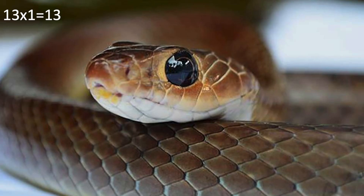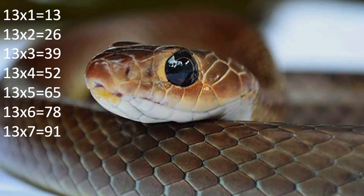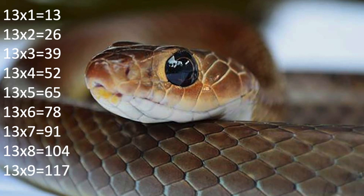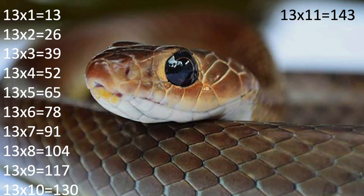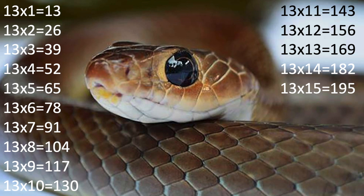Thirteen times one is thirteen. Thirteen times two is twenty-six. Thirteen times three is thirty-nine. Thirteen times four is fifty-two. Thirteen times five is sixty-five. Thirteen times six is seventy-eight. Thirteen times seven is ninety-one. Thirteen times eight is one hundred and four. Thirteen times nine is one hundred and seventeen. Thirteen times ten is one hundred and thirty. Thirteen times eleven is one hundred and forty-three. Thirteen times twelve is one hundred and fifty-six. Thirteen times thirteen is one hundred and sixty-nine. Thirteen times fourteen is one hundred and eighty-two. Thirteen times fifteen is one hundred and ninety-five.